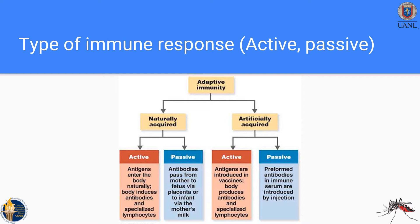The naturally acquired passive type involves antibodies that pass from mother to fetus via the placenta or to the infant via the mother's milk. In the artificially acquired section of adaptive immunity, there are also two types — active and passive. In the active one, antigens are introduced via vaccines created by scientists. The passive one involves preformed antibodies in immune serum introduced by injection.